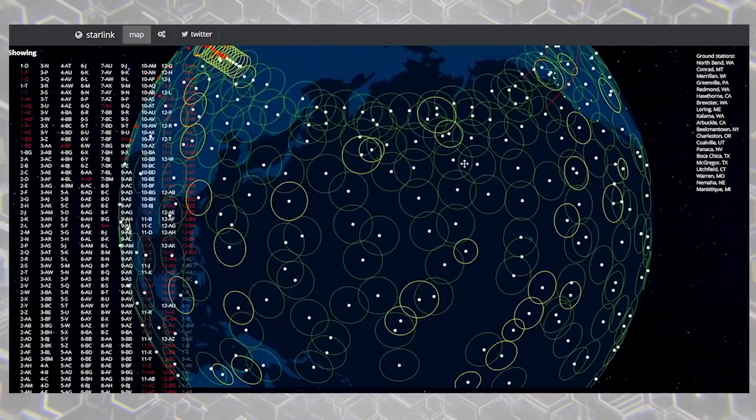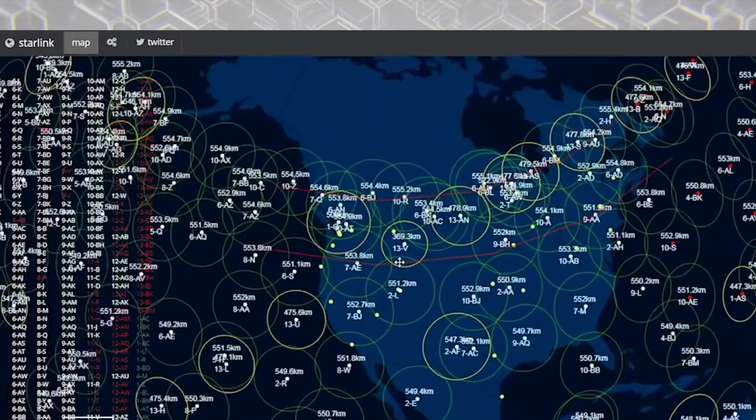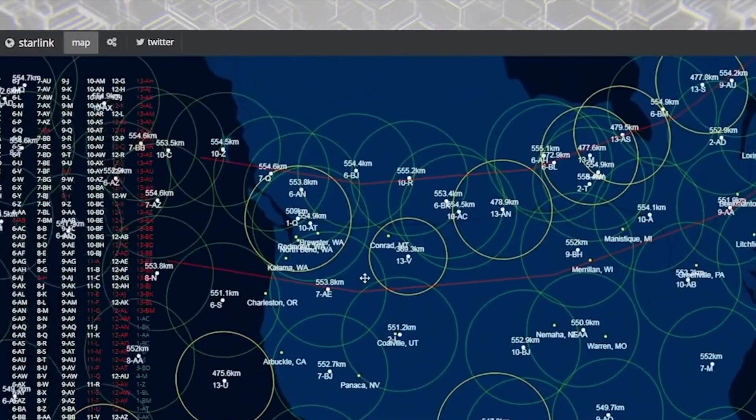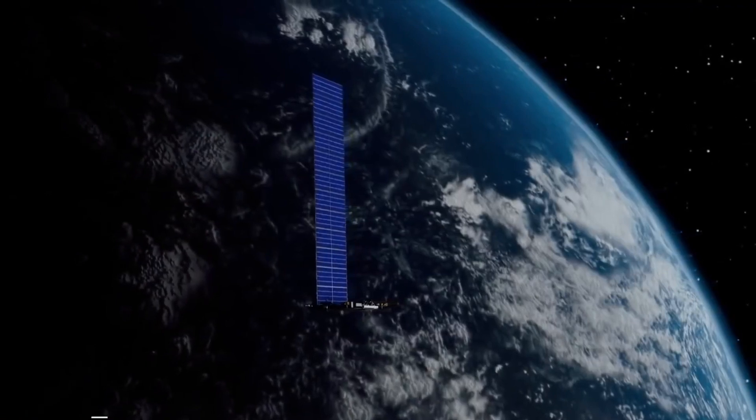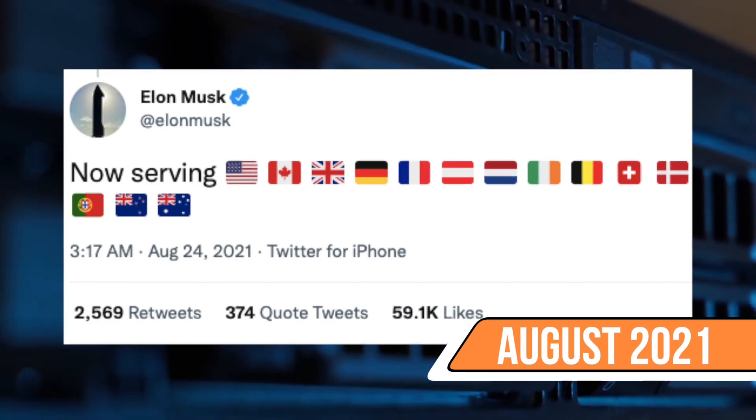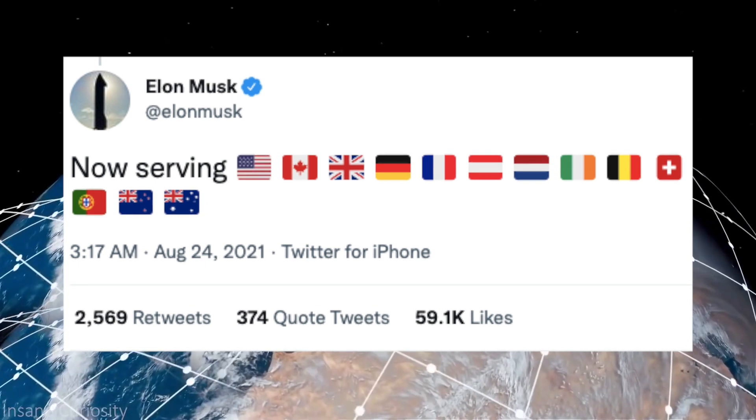Well, numbers are one thing, but how do these satellites translate into the real world? Well, as of August 2021, Starlink is available in 14 countries with more added every few months. But when will you get Starlink?